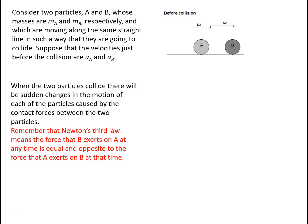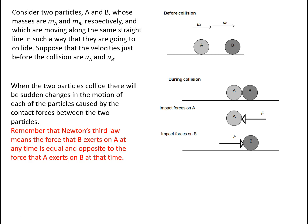During the collision, there will be sudden changes in the motion of the particles caused by the contact forces between those two particles. Newton's third law means that the force that B exerts on A at any time will be equal and opposite to the force that A exerts on B at that time. So during the collision, if B is exerting a force F to the left on A, then A will be exerting an equal but opposite force F acting to the right on B.